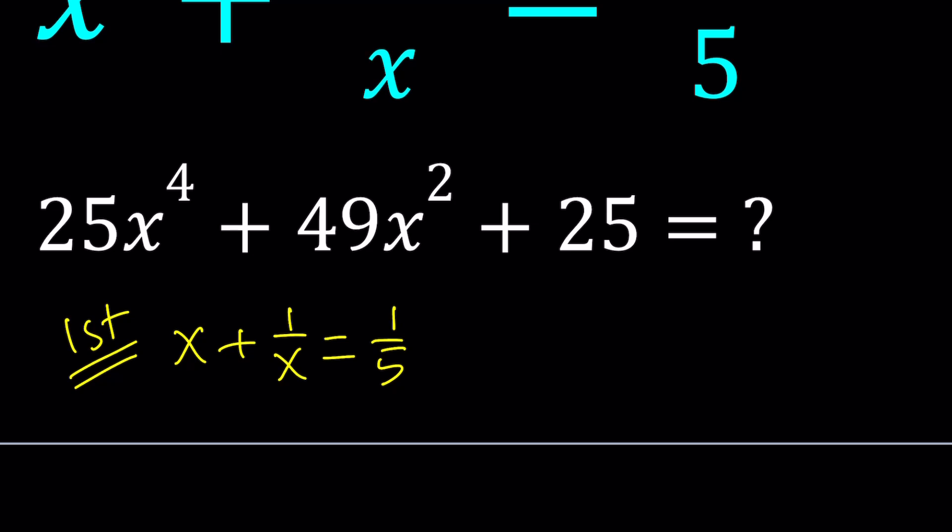If x is a real number, x plus 1 over x is always going to be greater than or equal to 2. Of course, this is true for positive values of x. If x is negative, then you're going to be on the other side of the number line, which is basically less than or equal to negative 2.